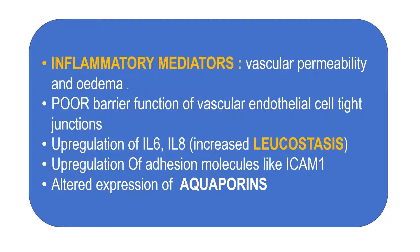The inflammatory mediators will cause increased vascular permeability and poor barrier function of the vascular endothelial tight junctions. Moreover, there will be upregulation of interleukin-6 and interleukin-8, leading to increased leukocyte migration — called leukostasis — and upregulation of various adhesion molecules such as ICAM (intracellular adhesion molecules). Whenever a cell expresses adhesion molecules like ICAM, leukocytes get attracted, stick to these molecules, and thereby release a lot of inflammatory mediators.